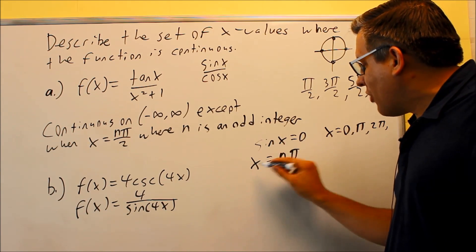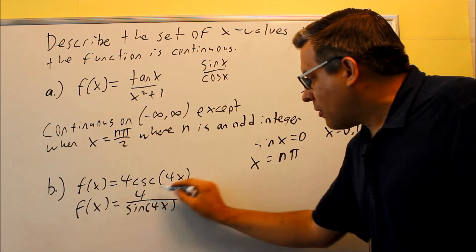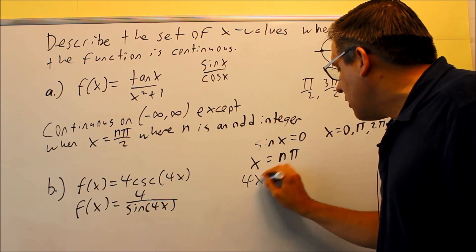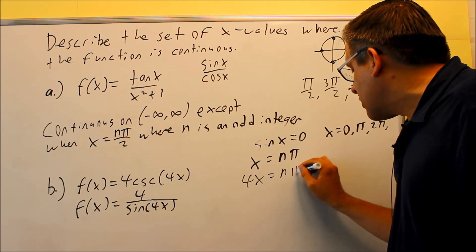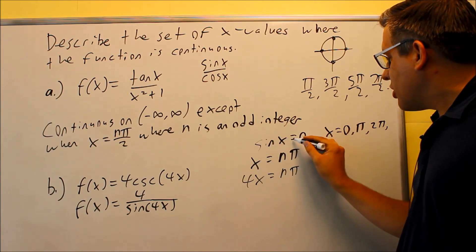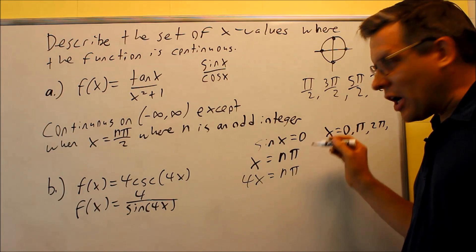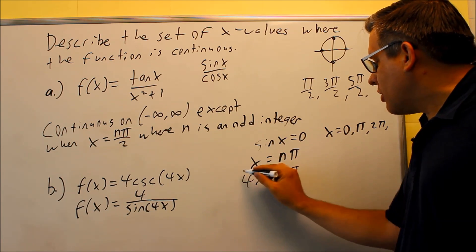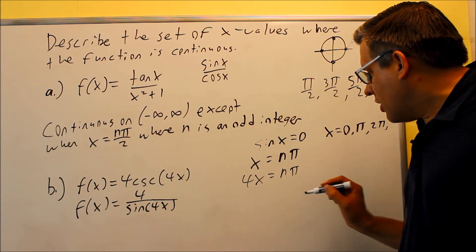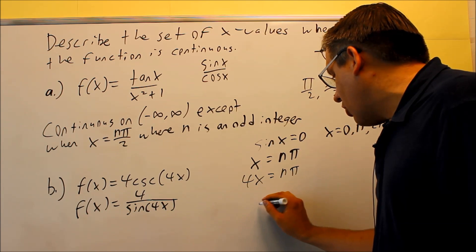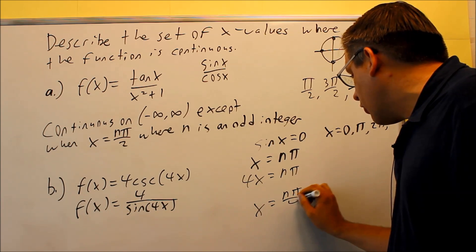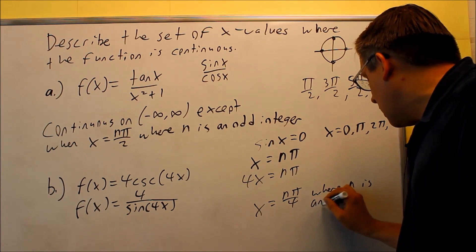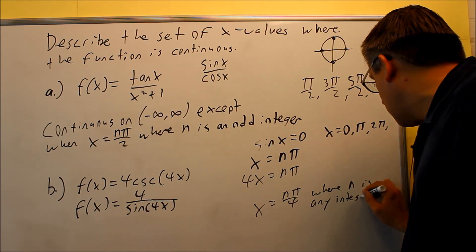However, this only describes if I have it as x. This problem has a four x on the inside. So what I need to do is I need to set this equal to four x instead. So in this case, if it was sine x equals zero, that would be the answer. But this problem, I have sine of four x equals zero. So because of that, I need to certainly make that a four x. So I need to divide both sides by four, and I get x is equal to n pi over four, where n is any integer.